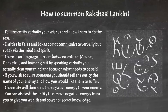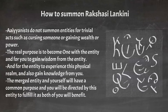For example, if you wish to curse someone you should tell the entity the name of your enemy and how you would like them to suffer. The entity will then send the negative energy to your enemy. You can also ask the entity to remove negative energy from you, to give you wealth and power, or secret knowledge. Many of our world leaders invoke entities this way to further their careers or power base. However, many Ayanists do not summon entities for trivial acts such as cursing someone or gaining wealth or power. The real purpose is to become one with the entity, for you to gain wisdom from the entity, and for the entity to experience this physical realm and gain knowledge from you.